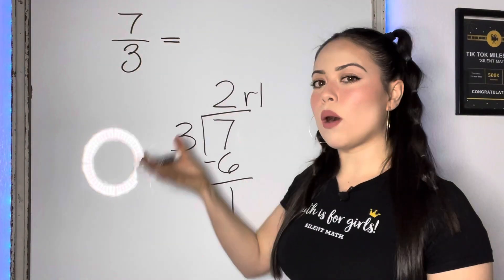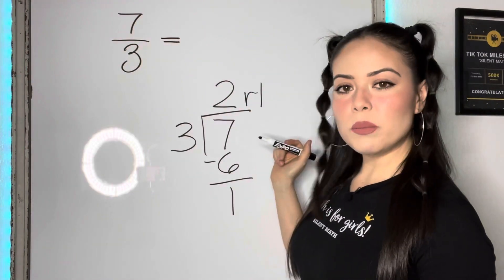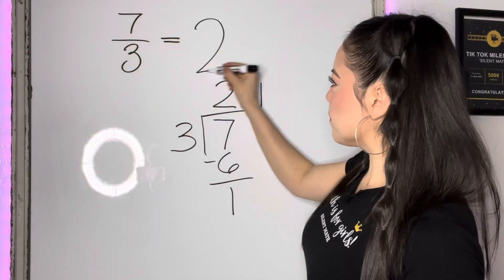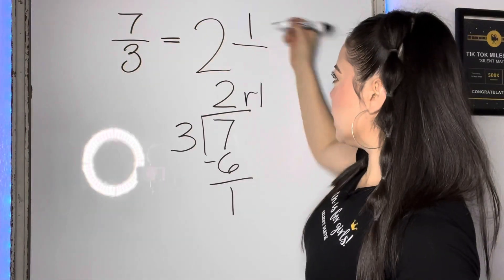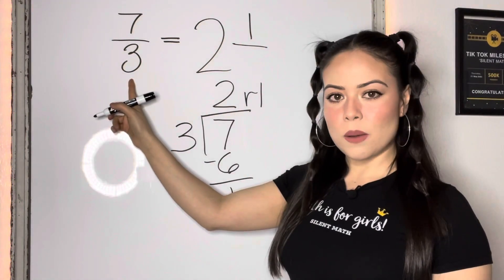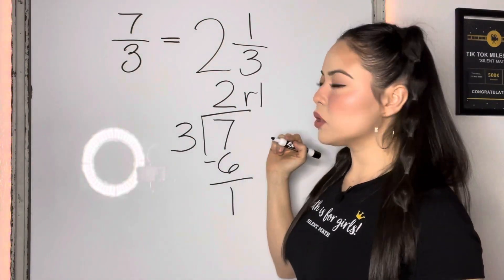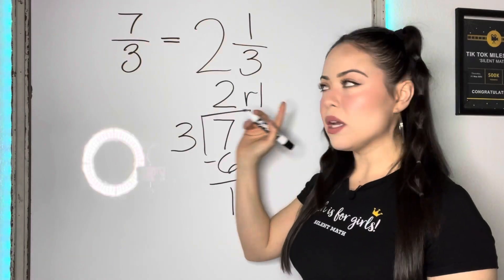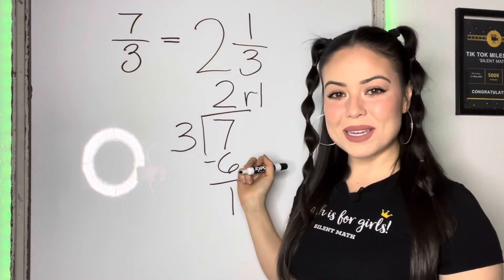So you may ask yourself, why are we dividing? This is the reason. So that whole number that we found will be the whole number of your mixed number. Your remainder will be the numerator of your mixed number, and you're gonna bring that denominator from your original improper fraction onto your mixed number. So now we're able to create the two and one third. So seven thirds is equivalent to two and one third as a mixed number.